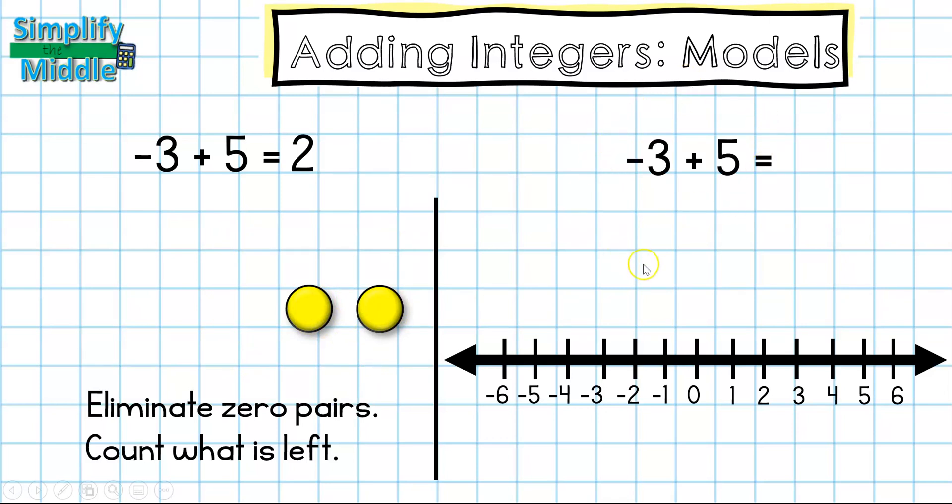Let's look at the same problem on the number line. I'm going to start at zero and this negative is telling me to travel left three. So that's what I'll do first. Here I have a positive five which I know that that means travel to the right. If I start at negative three because I'm always going to be starting where my last number line left off.